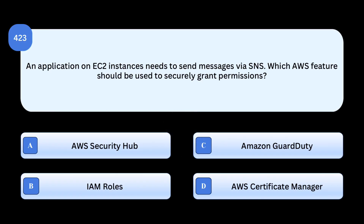Correct answer: IAM Roles. IAM roles allow EC2 instances to securely assume permissions to access AWS services like SNS. Why others are incorrect: AWS Security Hub is a security visibility tool. Amazon GuardDuty handles threat detection, not permissions. AWS Certificate Manager manages SSL/TLS certificates, not access.